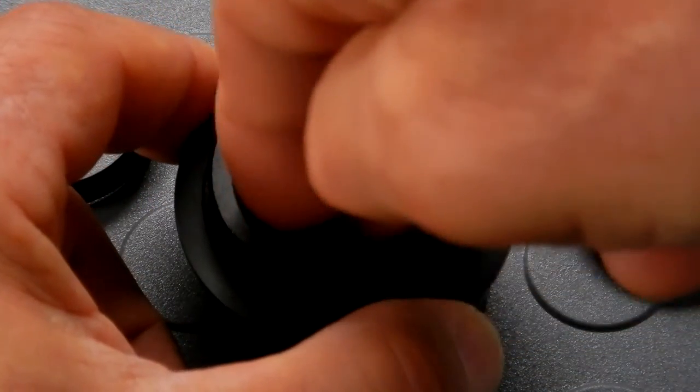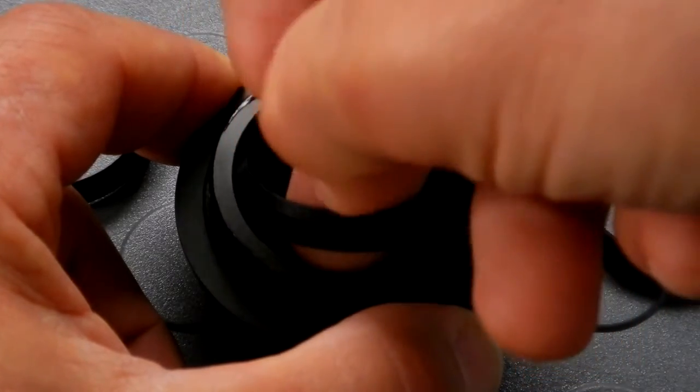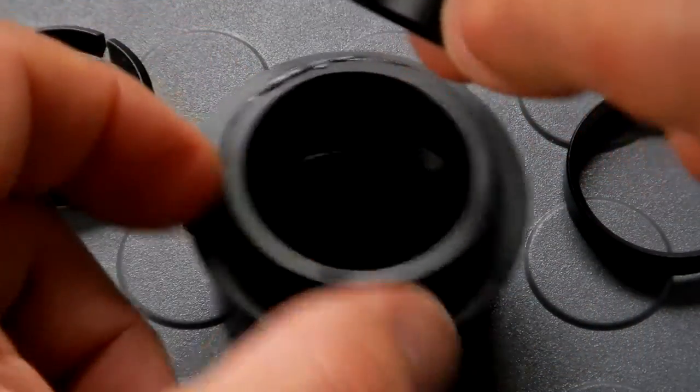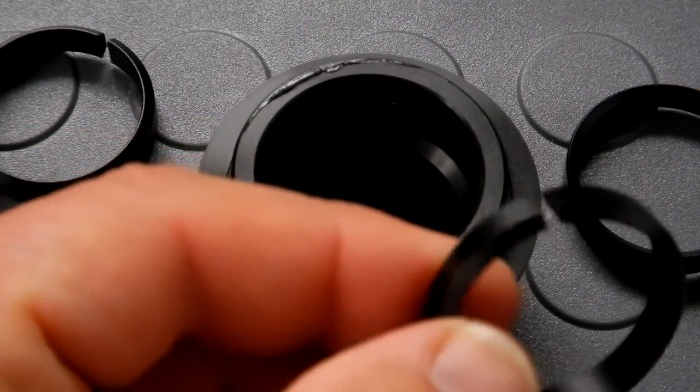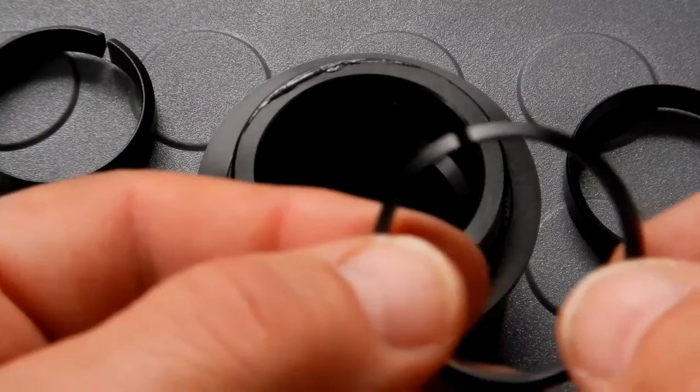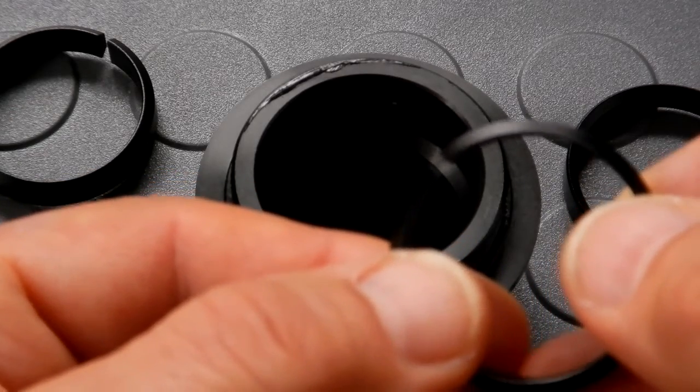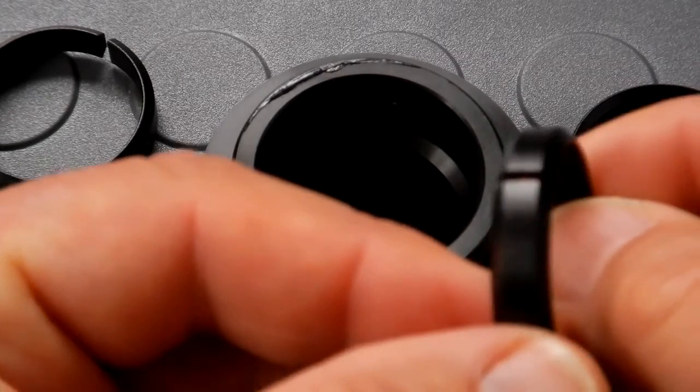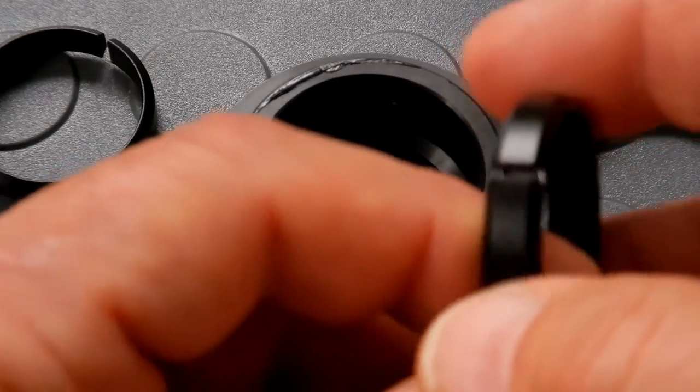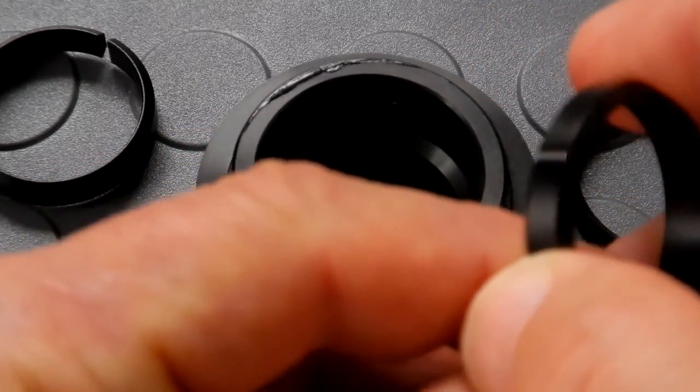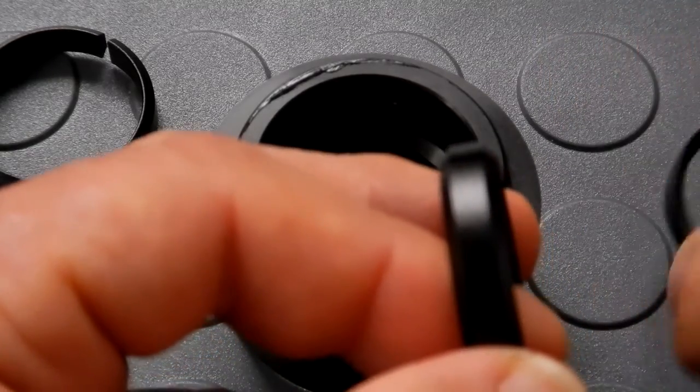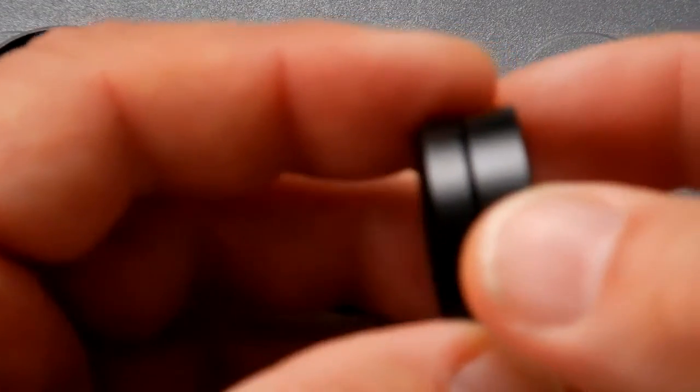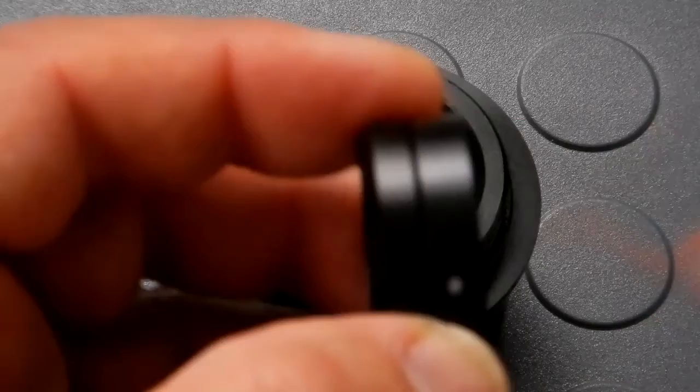Then inside we have another - I can pull that out - we have another collet type on the bottom side just like we had on the top side. So this is actually using two of these compression rings to lock onto your eyepiece with this solid piece between them.